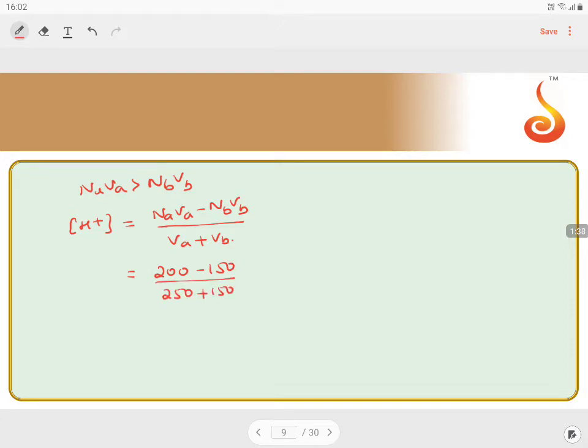Which comes to 50 by 400, which equals 1 by 8. So pH equals minus log of H+.